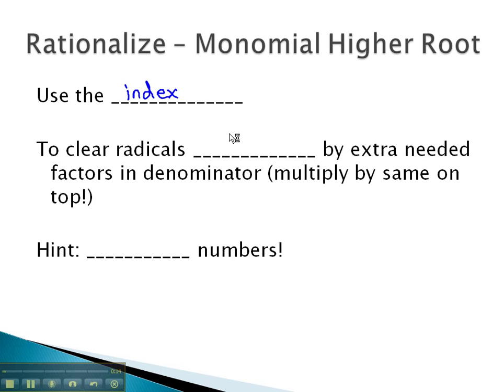We will then figure out how many extra factors we need to clear the radicals by multiplying by any extra needed factors in the denominator. It is very important that we multiply the same thing in the numerator as well.